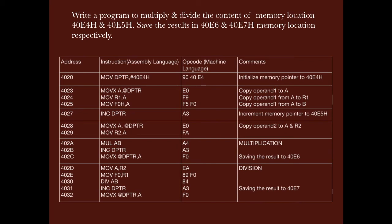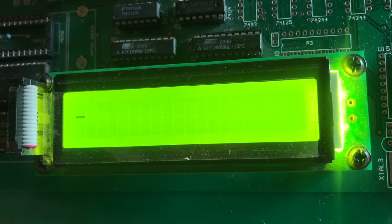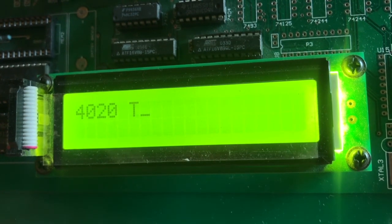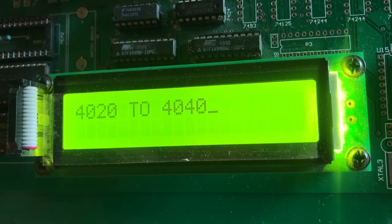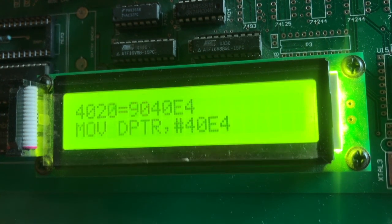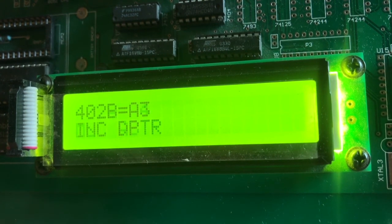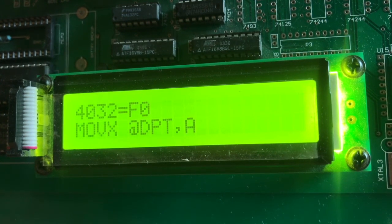For the division operation we need to reload the operands since multiplication changes the contents of registers A and B. So we move the second operand from R2 to A and the first operand from R1 to register B (F0H), then perform the division operation. Incrementing DPTR takes the pointer to 40E7H where the division result is saved. The last instruction is SJMP, which keeps the program in a loop. We disassemble from 4020H to verify all instructions are correct — multiplication, division, and the final SJMP are all present.